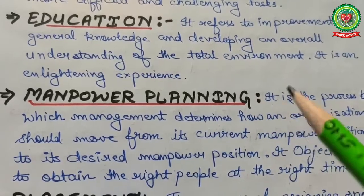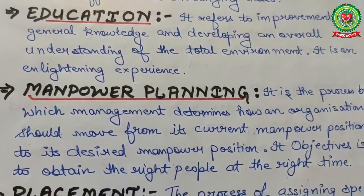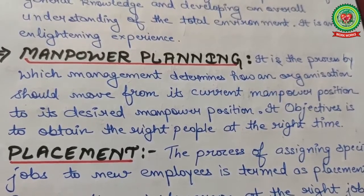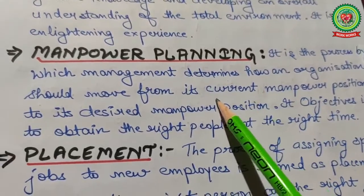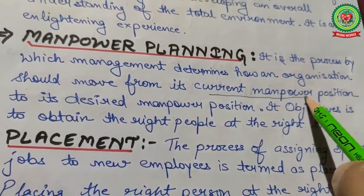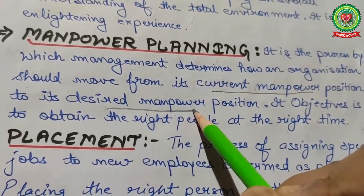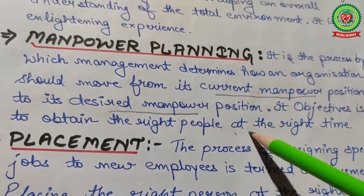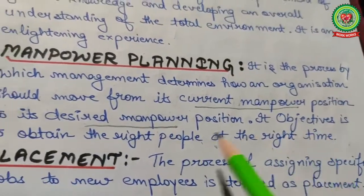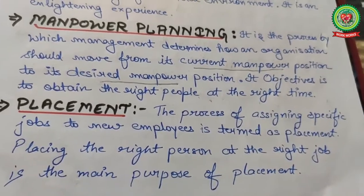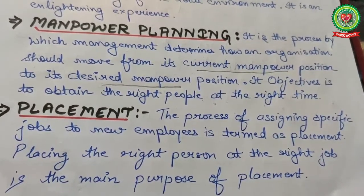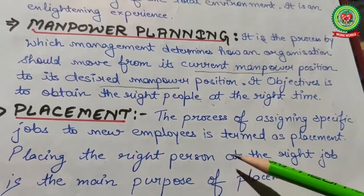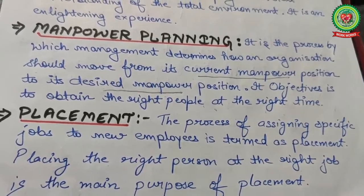Next key term is manpower planning — when you decide in your company how many employees are required. It is the process by which management determines how an organization should move from its current manpower position to its desired manpower position. Its main objective is to obtain the right people at the right time. Next, placement — the process of assigning a specific job to new employees, placing the right person at the right job.